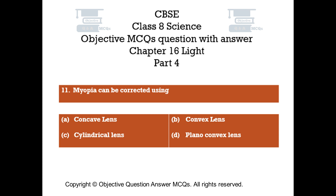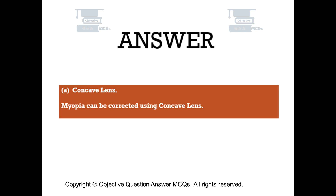Question number 11. Myopia can be corrected using: Option A concave lens. Option B convex lens. Option C cylindrical lens. Option D plano convex lens. The right answer is option A: concave lens. Myopia can be corrected using a concave lens.